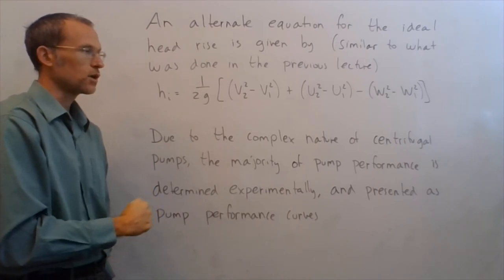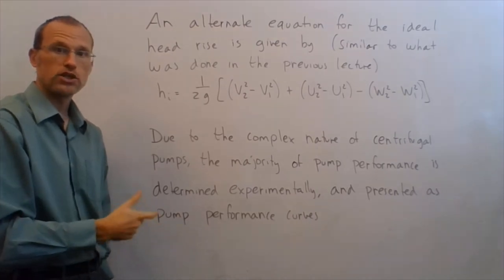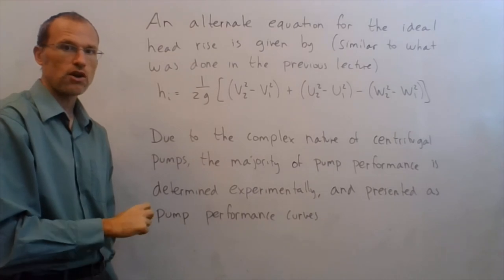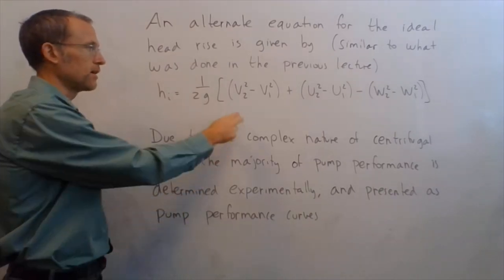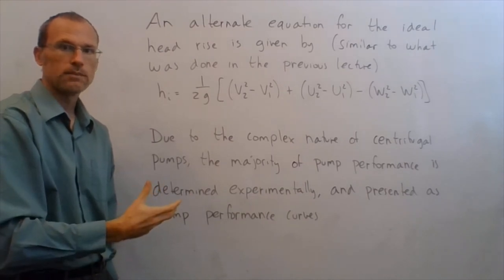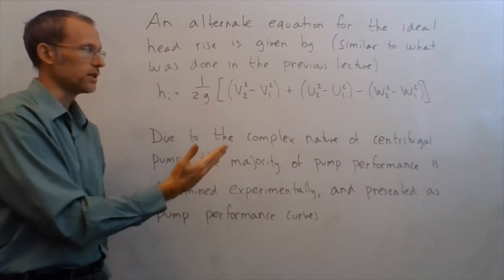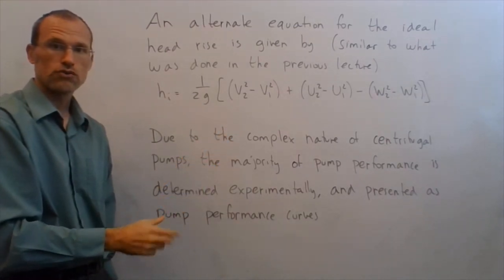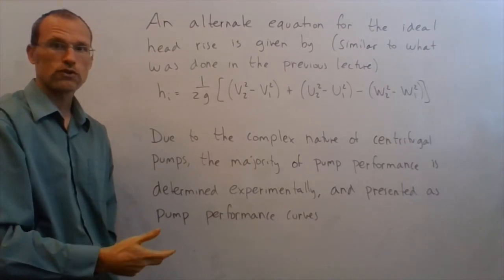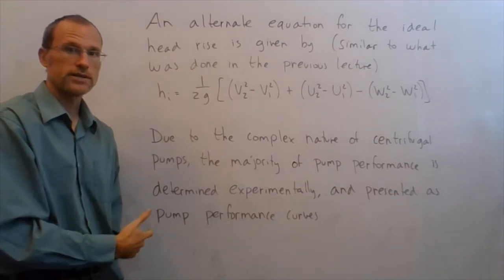So those are the basic equations we can use to analyze centrifugal pumps. The problem, well there's actually two problems with these. The first one is that a lot of these terms are kind of hard to define, my angles, for example, between u, v, and w, I have some exit angles, some entrance angle, and I'm assuming those are parallel to the fan blade, which may or may not be true. So I've also made a lot of assumptions, that's the second problem, which a lot of times oversimplify what's actually going on inside the centrifugal pump.